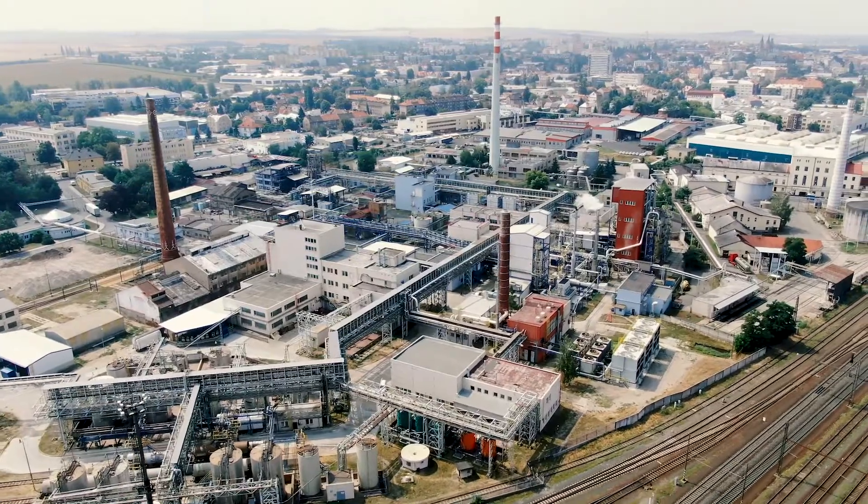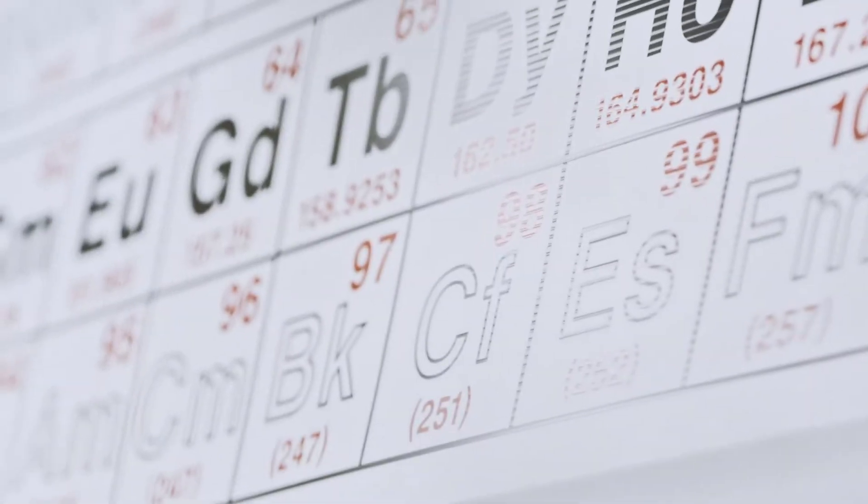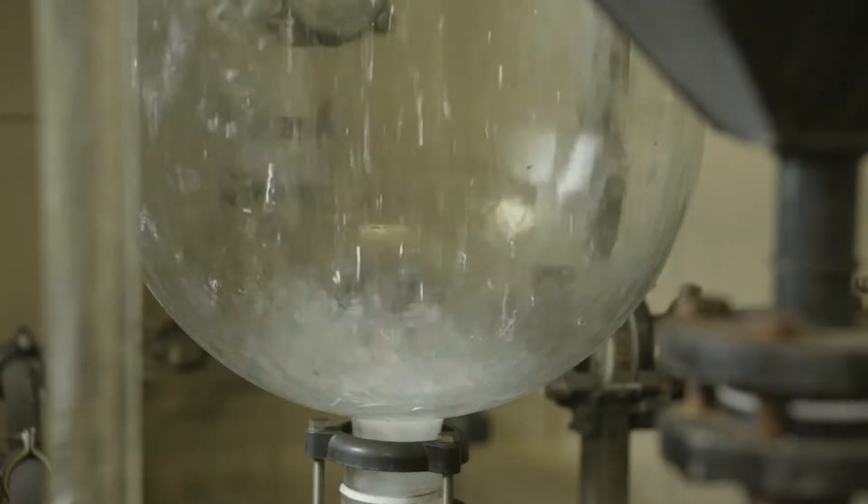The production program of Draslovka Company is based on the production of synthetic hydrogen cyanide, from which a wide range of products with a higher added value is produced.